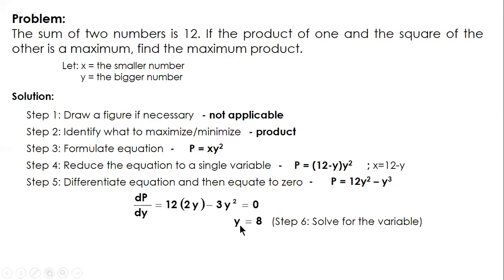That's the variable. So from this, substitute to find x. If y is 8, then x equals 4. Now we can solve for the unknown quantity, the product—find the maximum product. Determine the value of P: substitute x equals 4, y equals 8, and you have this answer: 256.